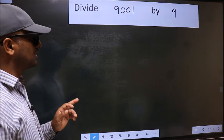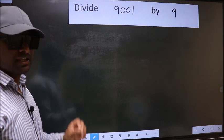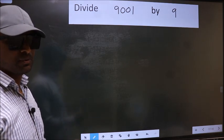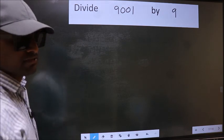Divide 9001 by 9. While doing this division, many do this mistake. What is the mistake that they do? I will let you know. But before that, we should frame it in this way.